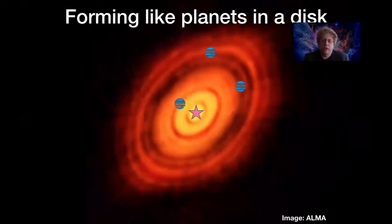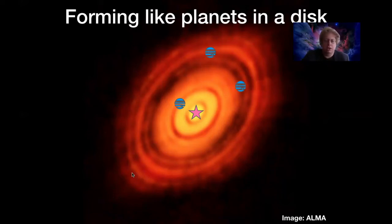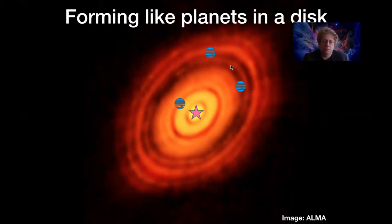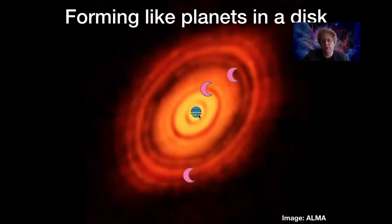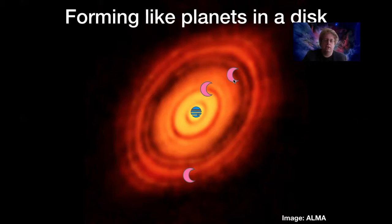Another way moons form is analogous to how planets form. Planets form in disks — you can see one here from the ALMA Observatory, the HL Tau disk, with a star in the center and rings indicating where planets are forming. Similarly, planets likely have their own circumplanetary disks. Zooming in, you'd find a disk around the planet, and further out, moons coalescing using basically the same processes as planet formation.